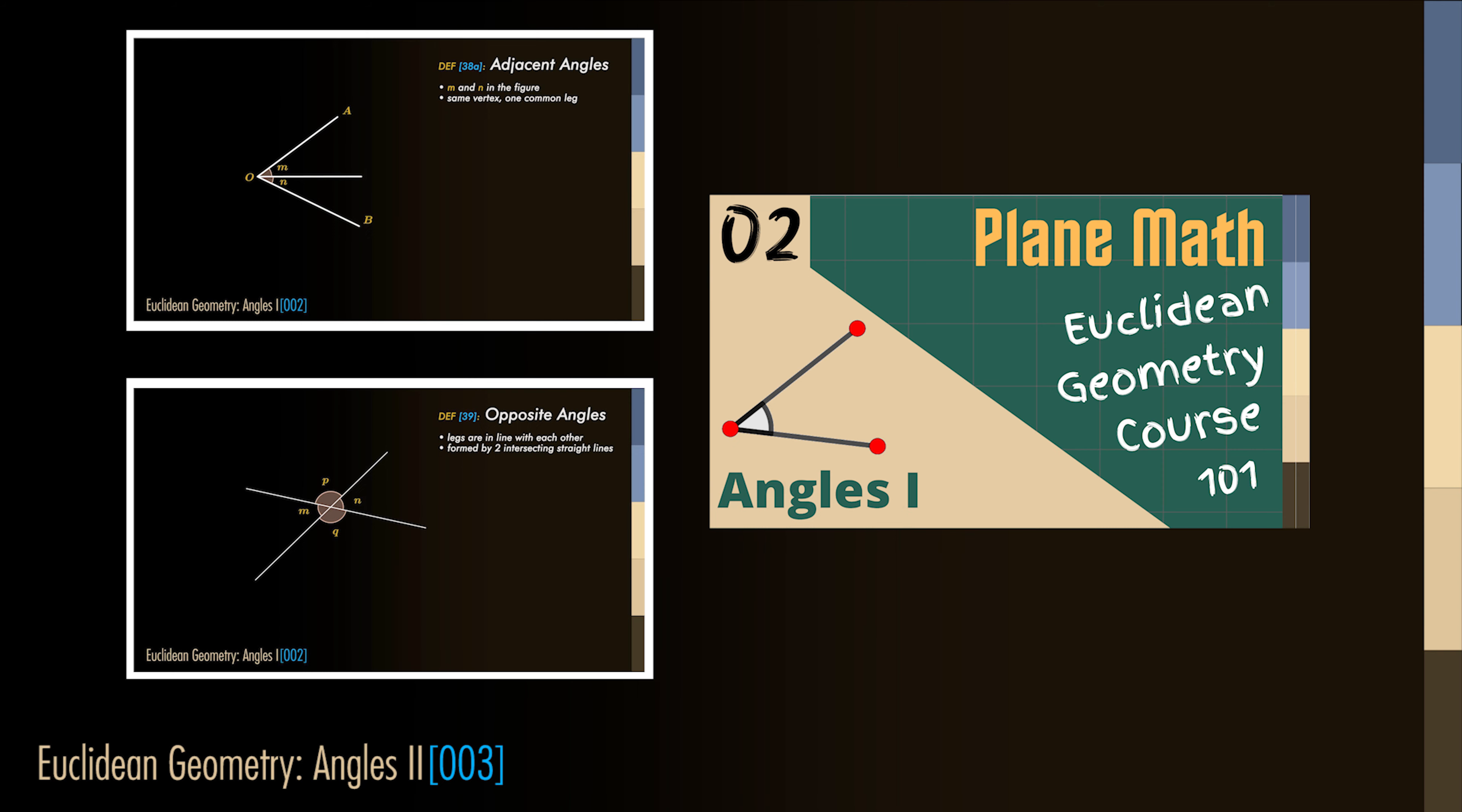In the previous lesson we have defined a few types of angles. We will talk about two other types of angles, but to do that we will have to define a few operations that can be done with angles similar to what we have defined for line segments.